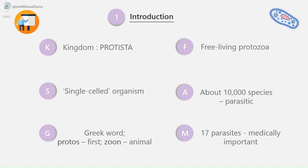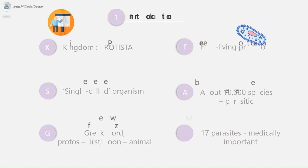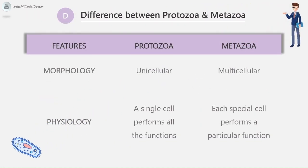About 10,000 species of protozoa are parasitic; only 17 of them are medically important. Next is the difference between protozoa and metazoa. Morphologically, protozoa are unicellular (single-celled) organisms, whereas metazoa are multicellular. Physiologically, in protozoa a single cell performs all functions — respiration, digestion, absorption, excretion, reproduction — whereas in metazoa each specialized cell performs a particular function.